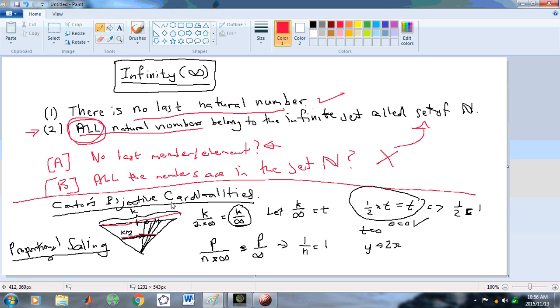If a line has length p, then we can say that p over n times infinity is equal to p over infinity. This would imply that 1 over n is equal to 1, and this is only possible if n itself is equal to 1. That is, these line segments are the same length. Bolzano said a bijective mapping from one line to another does not imply the same number of points in these two line segments.